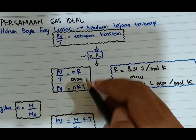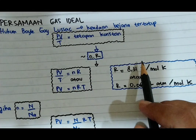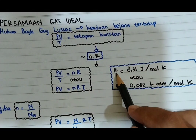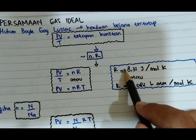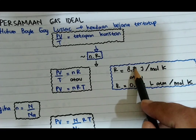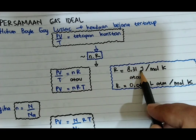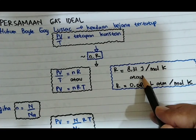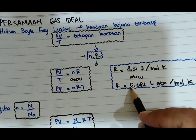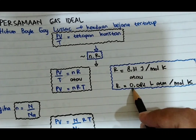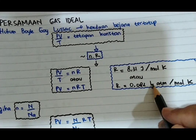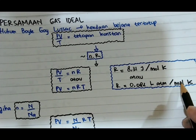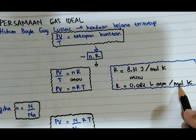R di sini merupakan tetapan umum dari gas ideal yaitu sebesar 8,31 J per mol Kelvin, atau bisa juga menjadi 0,082 liter atmosfer per mol Kelvin.